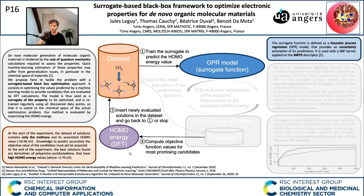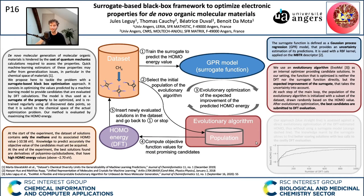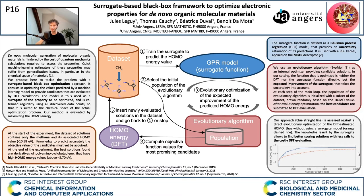Here, we propose an optimization method based on a machine learning surrogate function that estimates the values of the property to be optimized. It is used to select promising molecules that will be evaluated by quantum mechanics. At each step, these new results are inserted in the training dataset, so the surrogate is trained again with molecules that are more and more relevant for the property. New candidate molecules are obtained at each step by using an evolutionary algorithm to maximize the expected improvement of the surrogate function. This is very similar to Bayesian optimization, but the evolutionary algorithm allows us to generate solutions in the whole chemical space. We evaluate our method on the maximization of the HOMO energy and show that it can find high-scoring molecules using fewer calls to the costly property evaluator than a purely evolutionary approach.